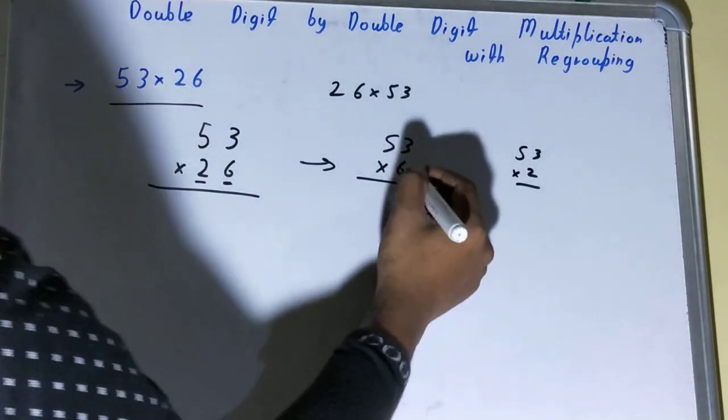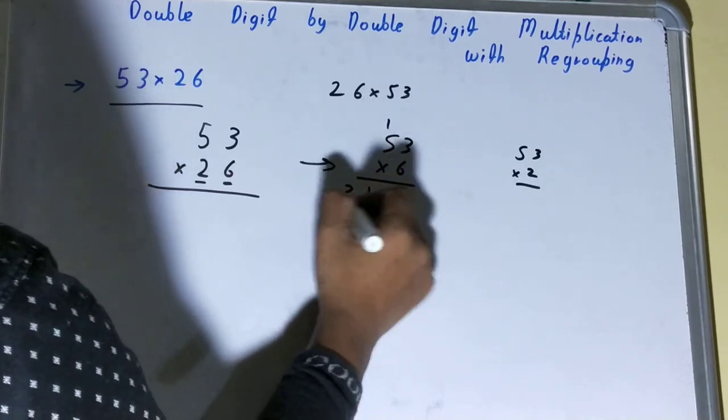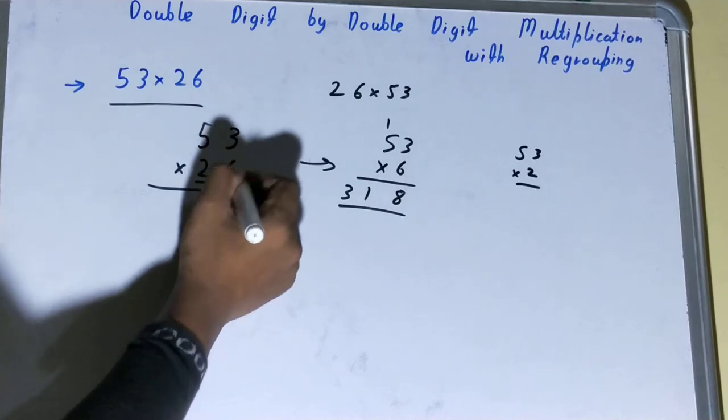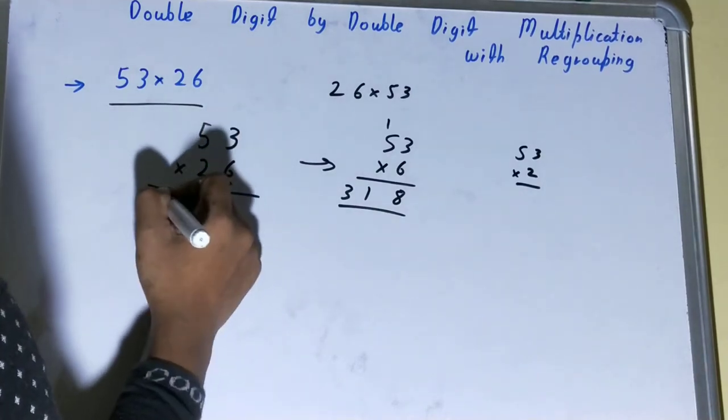6 times 3 is 18, 1 will be over here. 6 times 5 is 30, plus 1 is 31. So you are getting 318 when you're multiplying 53 with the first digit or ones place number. Write the answer over here.